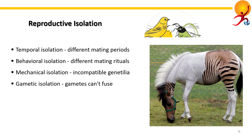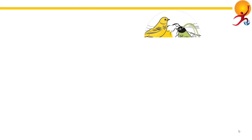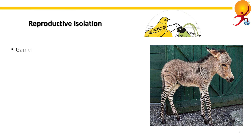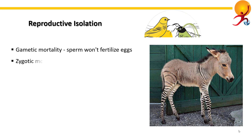Gametic isolation is when gametes — that is, sperm and eggs — are unable to fuse and fertilize. Apart from this, there are post-mating mechanisms as well, like gametic mortality. In this case, the sperm fails to fertilize the egg due to various reasons such as adverse climate in the case of external fertilization, or sperm death in the female genital tract in the case of internal fertilization.